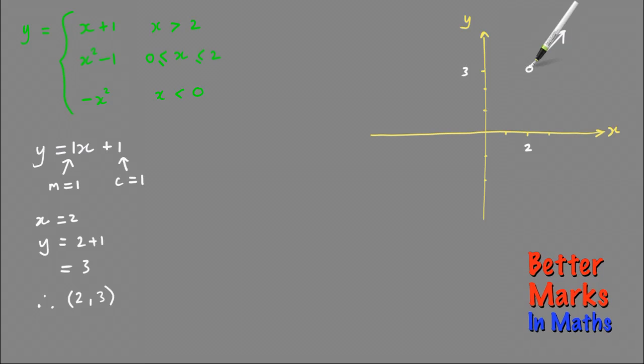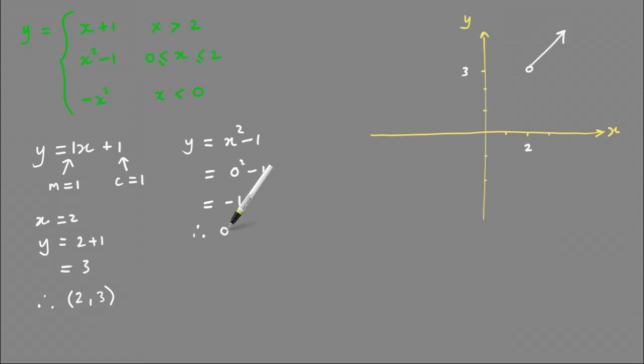Now I'm going to sketch y equals x squared minus 1. The left endpoint will be when x equals 0, so subbing that into the equation: 0 squared minus 1, which equals minus 1. Therefore, the left endpoint is 0 comma minus 1.